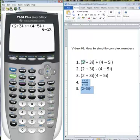We just combine the real parts: 2 plus 4 gives us 6. And combine the imaginary parts: 3i plus negative 5i gives us negative 2i.